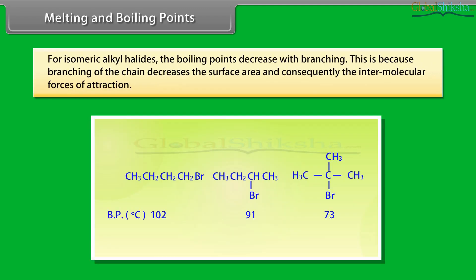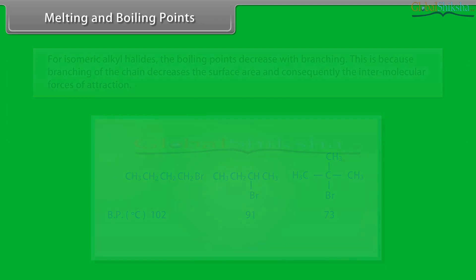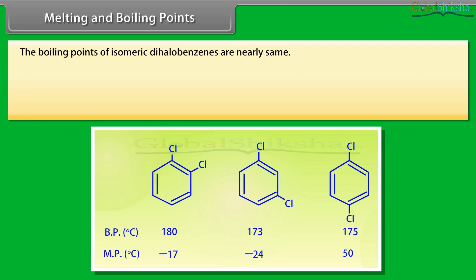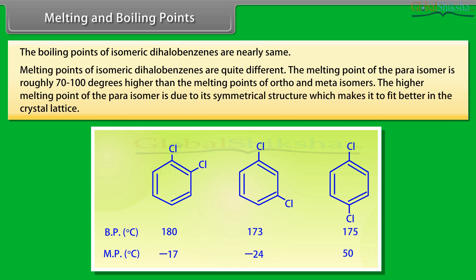For isomeric alkyl halides, the boiling point decreases with branching. This is because branching of the chain decreases the surface area and consequently the intermolecular forces of attraction. The boiling points of isomeric dihalobenzenes are nearly the same. The melting points of isomeric dihalobenzenes are quite different. The melting point of the para-isomer is roughly 70 to 100 degrees higher than the melting point of ortho- and meta-isomers. The higher melting point of the para-isomer is due to its symmetrical structure, which makes it fit better in the crystal lattice.